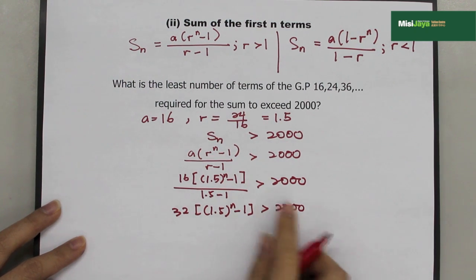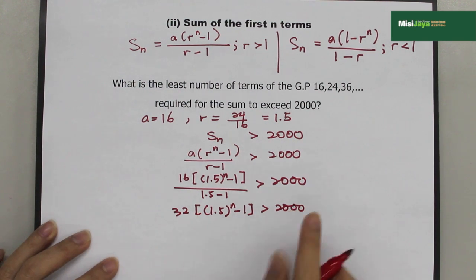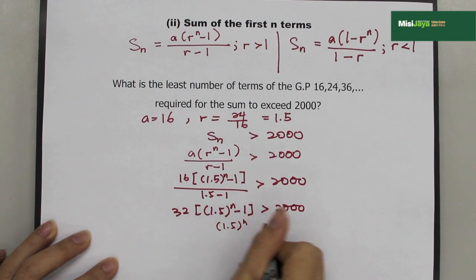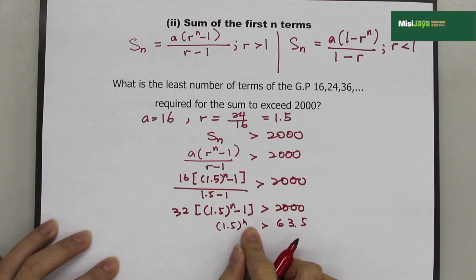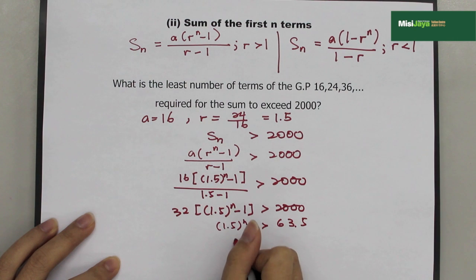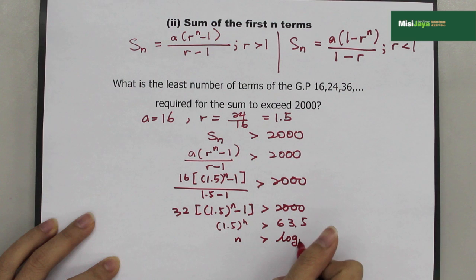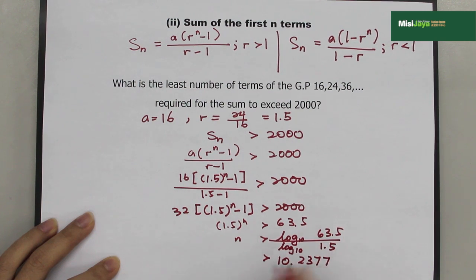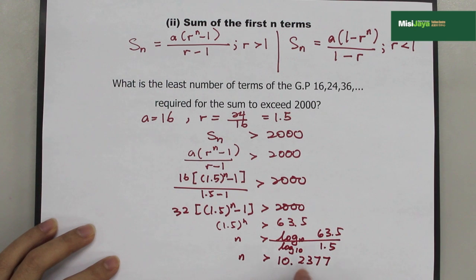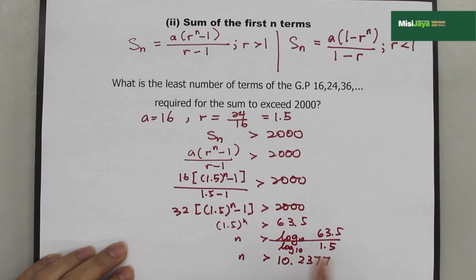Bringing 32 and the negative 1 to the right-hand side gives 1.5 to the power N more than 63.5. Taking log of both sides: N more than log 63.5 over log 1.5, which equals 10.2377. The integer greater than 10.2377 is 11, therefore N equals 11.